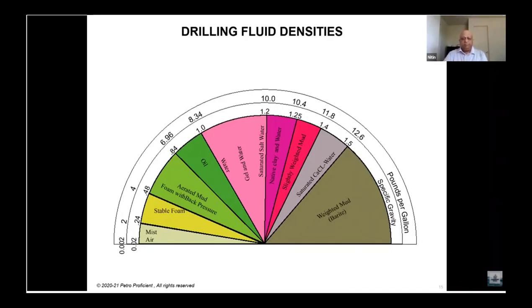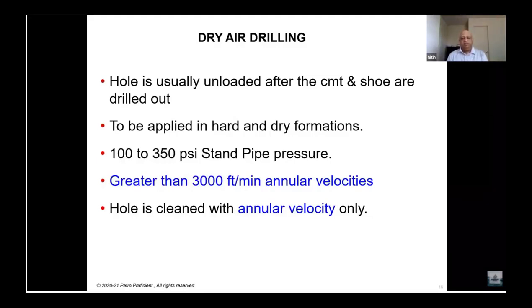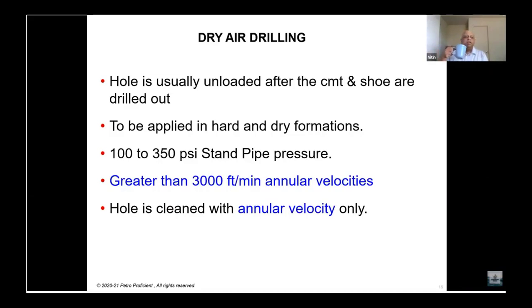In dry air drilling, the hole is unloaded from conventional mud after you drill your cement shoe track, then the mud is replaced with dry air. Annular velocities are very high — around 3,000 feet per minute — and the hole is cleaned only with annular velocity, not viscosity. In conventional mud, viscosity suspends cuttings, but in air drilling, hole cleaning is done using high annular velocity. The velocities are so high and particles so small that the high-velocity air injected into the drill pipe and annulus cleans the hole with no viscous fluid present.